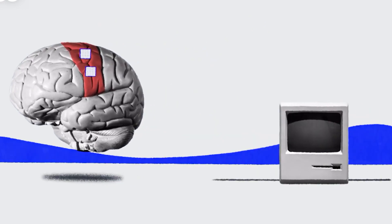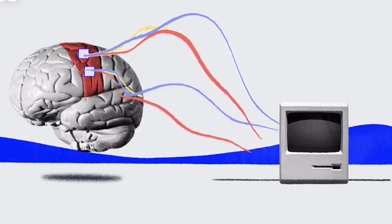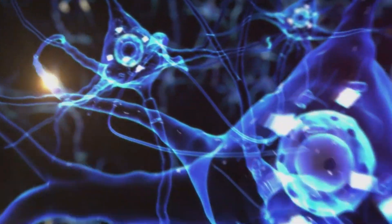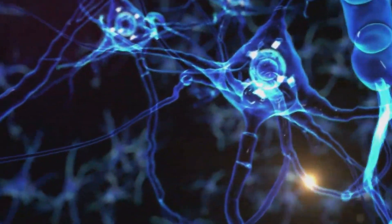At its core, Neuralink aims to create a direct link between the human brain and computers. This is achieved through the development of ultra-thin flexible electrodes, which are surgically implanted into the brain's neural tissue.